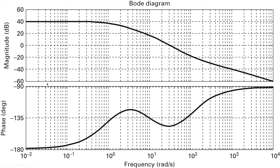Now let's set up our asymptotic lines for determining the transfer function. First we start with a horizontal line for our DC gain, approximately 40 dB — this is the red line, which we will use for our break frequency. Moving to the second asymptotic line, I place a tangent line in this region as the blue line. The intersection between this red line and this blue line gives a pole at 10 to the power of 0, which is just 1 radian per second. So the first pole is at 1 radian per second.